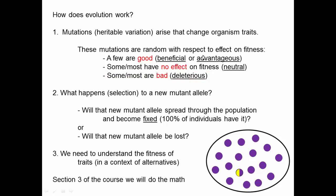The mutations are random with respect to fitness in the sense that whether it would be good to get a mutation does not influence the chance of an organism getting that mutation. Mutations just happen from time to time in different individuals — sometimes they're good, but most of the time they're neutral or deleterious.